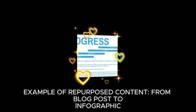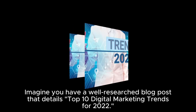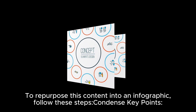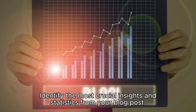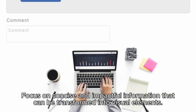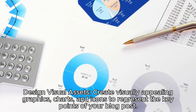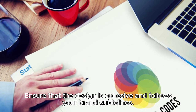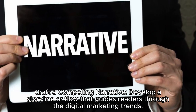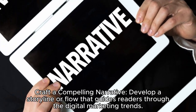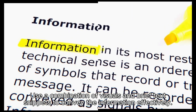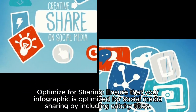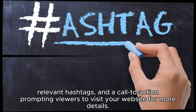Imagine you have a well-researched blog post detailing the top 10 digital marketing trends for 2022. To repurpose this into an infographic, follow these steps: First, condense key points — identify the most crucial insights and statistics and focus on concise, impactful information. Second, design visual assets such as graphics, charts, and icons to represent key points, ensuring the design is cohesive and follows your brand guidelines. Third, craft a compelling narrative that guides readers through the trends using visuals and brief text snippets. Fourth, optimize for sharing by including catchy titles, relevant hashtags, and a call-to-action prompting viewers to visit your website.